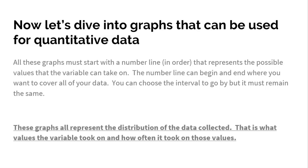Now let's focus on how to make graphs of them. All of these graphs usually are always going to start with a number line. That number line needs to go in order, and that number line needs to represent the possible values that the variable can take on. The number line can begin and end wherever you want it to, as long as it covers all of your data. So you don't have to start at zero if there's no data. If there's no data until 150, we'll start it at 150. You can choose the interval to which your number line goes by - fives, tens, twos, threes, twenties, fifty. That's completely up to you, but it needs to remain the same.